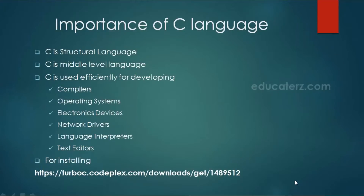We have different editors for development of C programs, like Eclipse CDT, Turbo C, Bloodshade Dev C++, CodeBlocks, NetBeans IDE, Microsoft Visual Studio Express, CodeLite, as well as Borland C++. In this tutorial, we will be using Turbo C for developing C applications. For installing Turbo C, you can use the link provided — it is freely available. We can download and execute that file to get Turbo C installed.